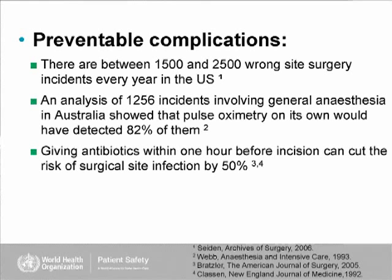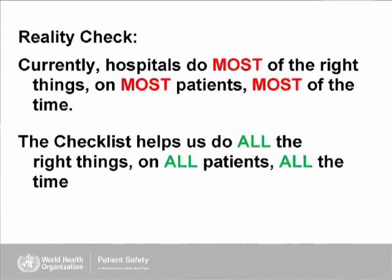If you consider essential monitoring in operating rooms, it's estimated that about 82% of incidents in anesthesia can be prevented by having basic monitoring systems — EKGs, blood pressure, or oxygen monitoring. Antibiotics, which are not commonly used in the developing world: if given within an hour of incision, they reduce the rate of surgical infection risk by about 50%. Hospitals do most of the right things most of the time for most patients, but we were trying to find a way to help hospitals do all the right things to all their patients all the time. That's where the checklist idea came from.